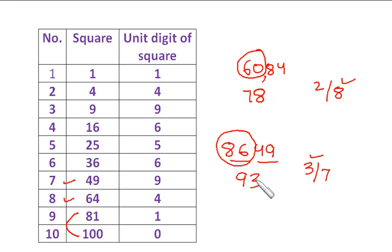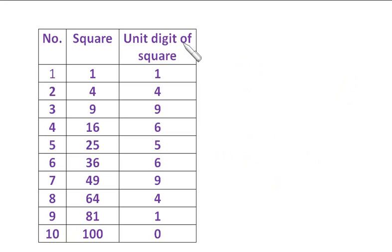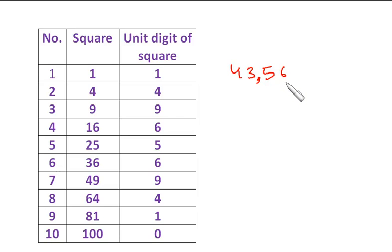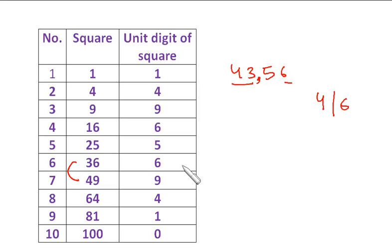Take 4356. Make the pairs: 56 and 43. The unit digit is 6, so the unit digit of the square root is 4 or 6. Since 43 lies between squares of 6 (=36) and 7 (=49), the tens digit is 6. Multiply 6 by its next number: 6×7=42. Since 43 is greater than 42, choose the greater number: 6. So the square root of 4356 is 66.